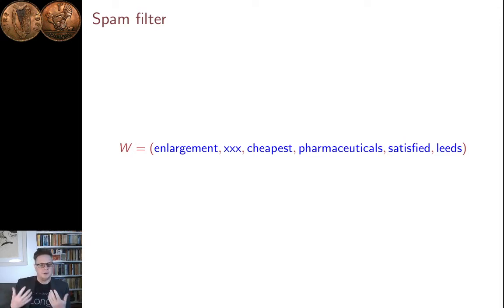These days, when I was trying to find an example of a spam email to show here, almost all the spam I get was people telling me that I should publish in their academic journal. In the olden days, spam used to be largely around selling you stuff, and probably mostly around selling you stuff that was either legal or semi-legal, such as study drugs, or was sort of embarrassing products that were supposed to make sex better. So, here's an example of some words that might occur in a spam email: enlargement, XXX, cheapest, pharmaceuticals, satisfied, and leads.